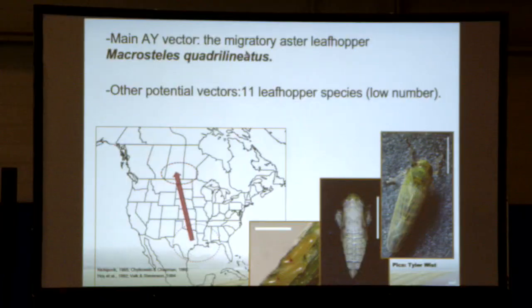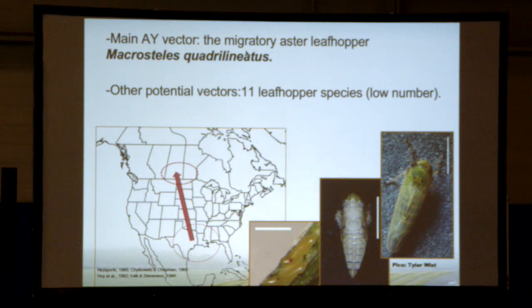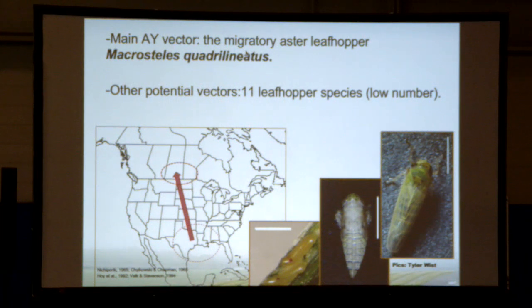Where do they come from and what are the vectors? The main vector is the migratory Aster Yellows leafhopper, which comes with the south wind from the southern US every spring. They land in Canada, usually at the end of May — sometimes beginning of May, like in 2012. On screen you can see the adult leafhopper on the far left, a nymph in the middle, and eggs from the female leafhopper.